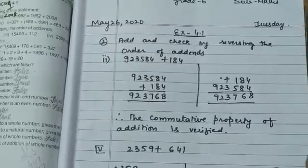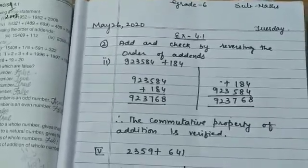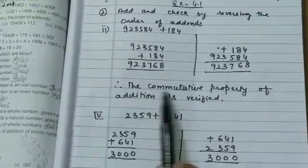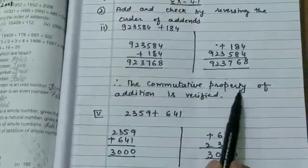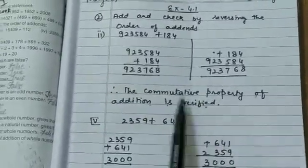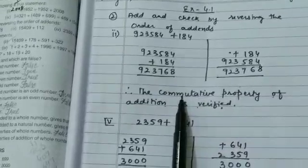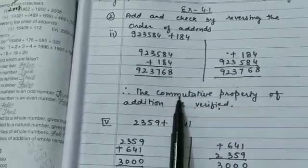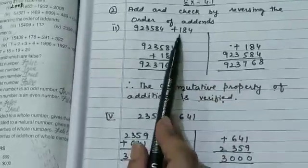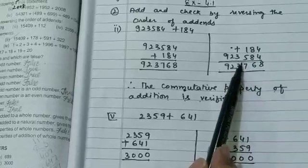2 plus 3 is 5, 3 plus 2 is 5. So what we have written below is the same. Therefore, the commutative property of addition is verified. Commutative, not associative, because we have two numbers and we changed their position.